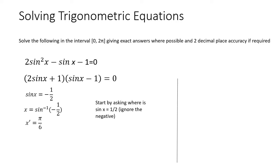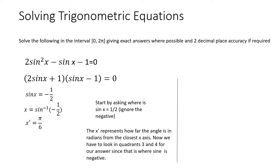You're going to get pi over 6 if you put sine to the minus 1 of one half. I put x prime equals, not x equals. What I'm going to do now is look at which quadrants to place that deviation in. For sine to be negative, I need to be looking in quadrants 3 and 4.